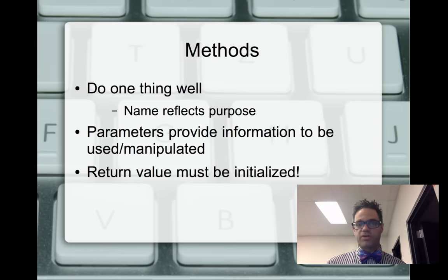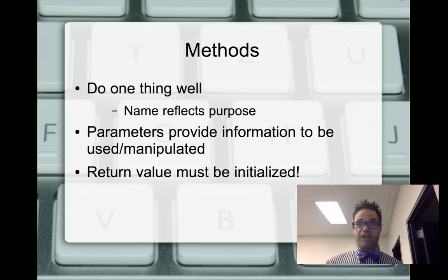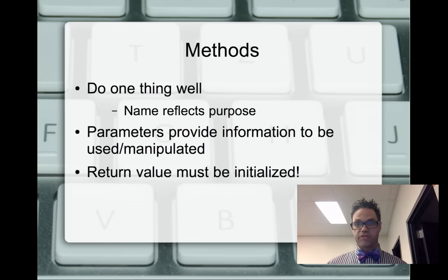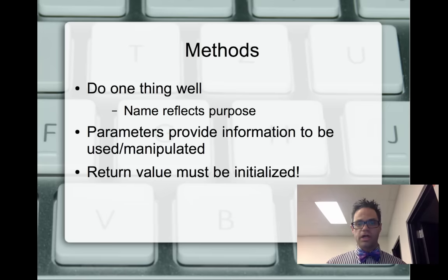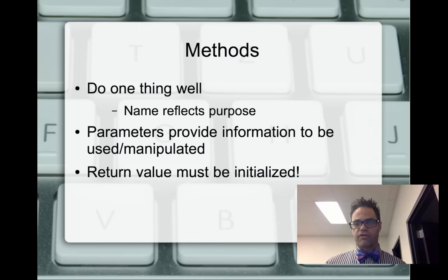Going along with that, we also have the idea of a return value. If you are returning from a method — anything that's not void — you need to make sure that variable or value has been initialized properly. A good approach: at the beginning of your method, declare a variable of the return type, initialize it with a good default value based on the preconditions, and make your last line of code return that variable. This usually earns at least one point on the free response.